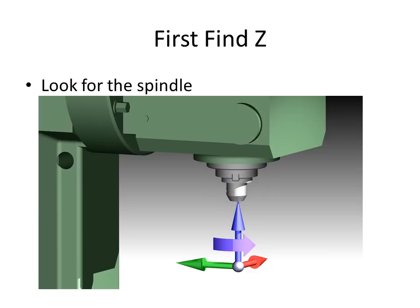When you're trying to get oriented with the axes on a machine tool, typically you look for the spindle first. That's going to be the Z axis. The spindle is the part that revolves, rotating around.